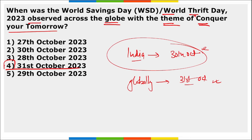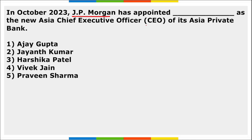JP Morgan has appointed Harshika Patel as the new Asia Chief Executive Officer for their Asia Private Bank. She will also retain her existing role as CEO of JP Morgan for Hong Kong.